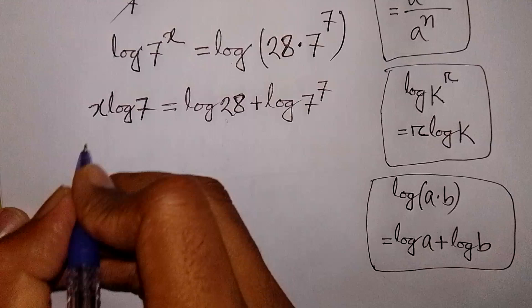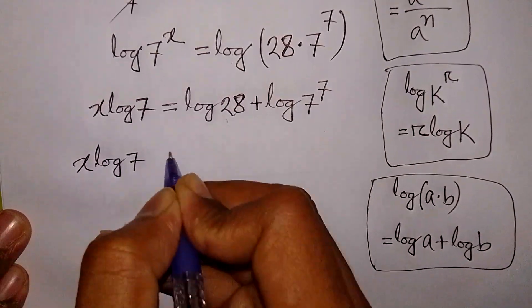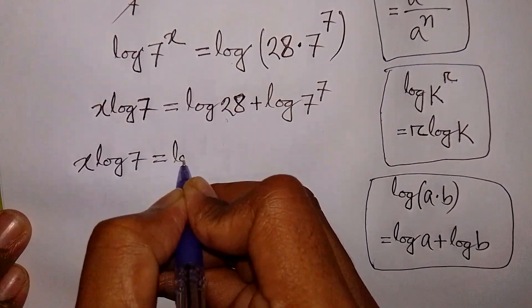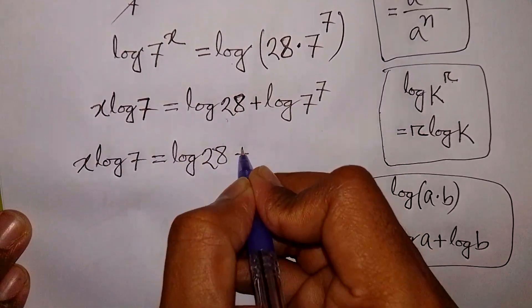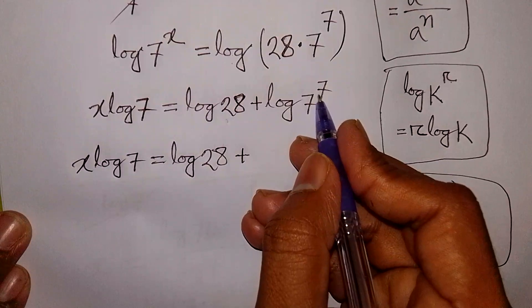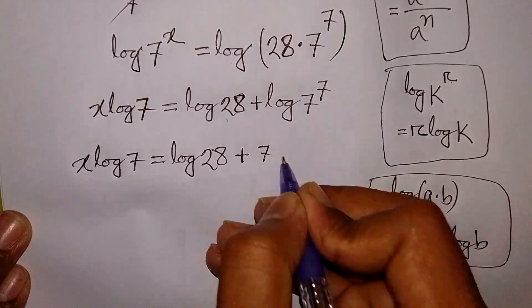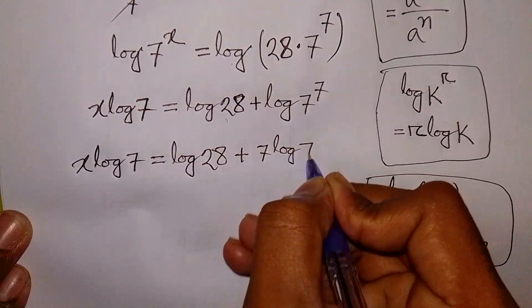Next step, we have x log 7 is equal to log 28 plus, this power 7 will move to the base, so it will be 7 log 7.